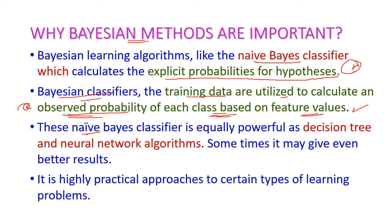The Naive Bayes classifier is equally powerful as other machine learning algorithms like decision tree and neural network algorithms. Sometimes the Naive Bayes classifier will give even better results, which is why it is important to learn. This is a highly practical approach to certain types of learning problems.